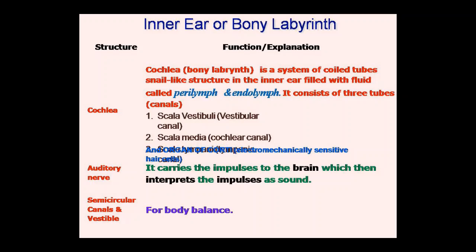The inner ear is the deepest part of the whole ear and is located in a place known as the bony labyrinth, which is a maze of bone passageways lined by a network of fleshy tubes known as the membranous labyrinth. A cushion of fluid called perilymph lies between the bony and membranous labyrinth, while a fluid called endolymph is found within the membranous labyrinth itself. Within the inner ear there is a chamber called the vestibule, which plays a major role in the sense of balance.